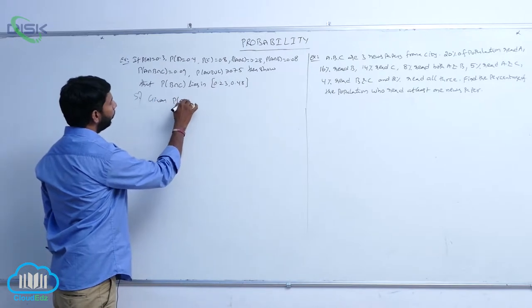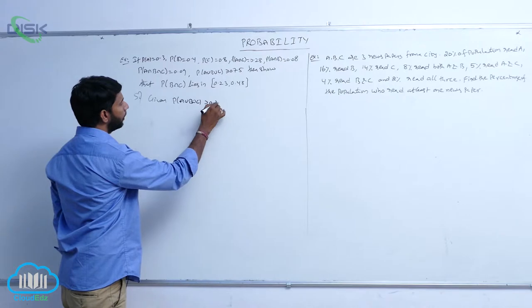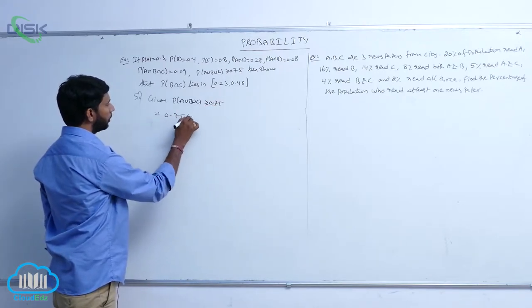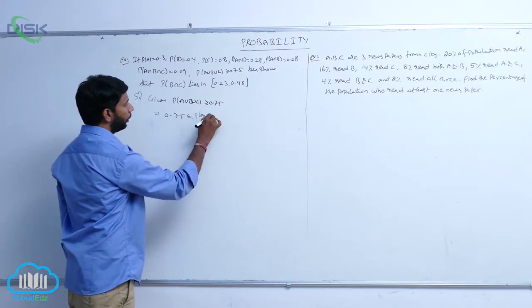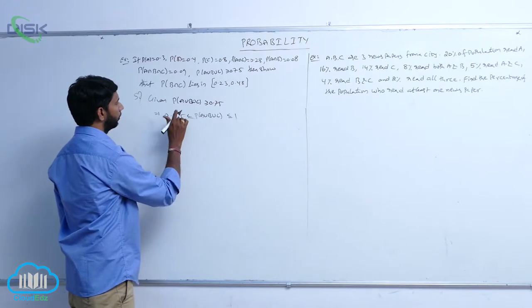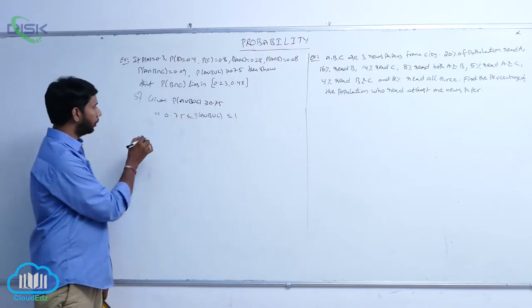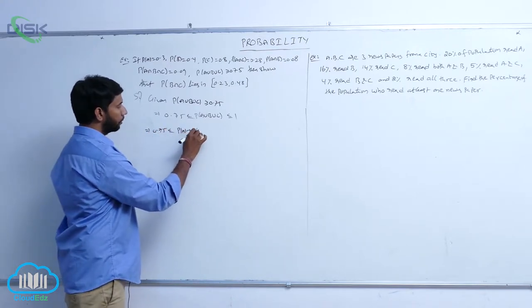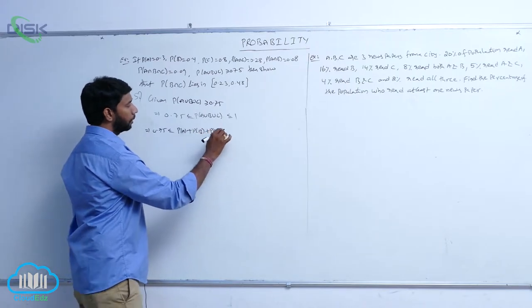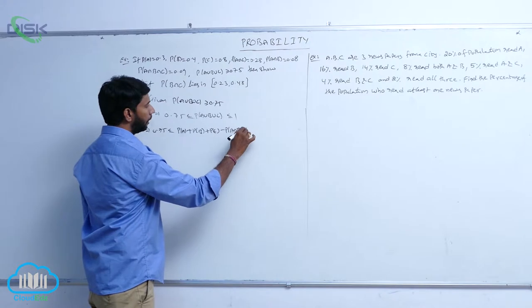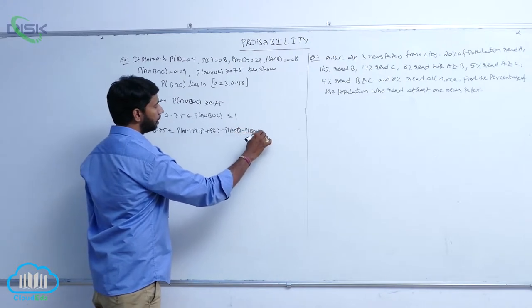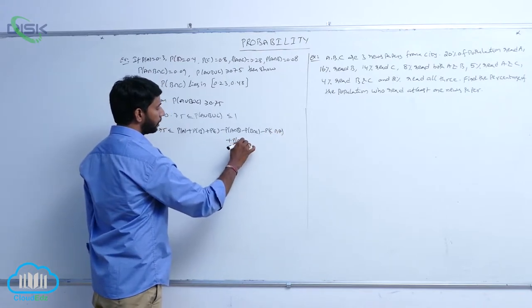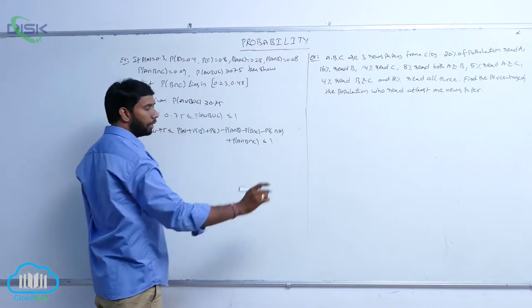Given P(A∪B∪C) ≥ 0.75, it implies 0.75 ≤ P(A∪B∪C) ≤ 1. So: 0.75 ≤ P(A) + P(B) + P(C) − P(A∩B) − P(B∩C) − P(C∩A) + P(A∩B∩C) ≤ 1.